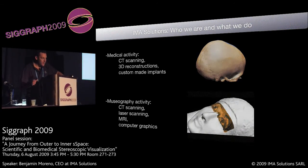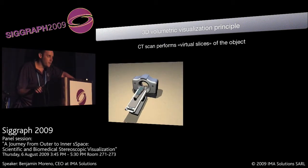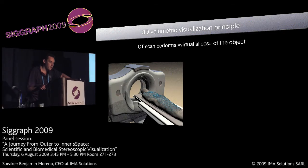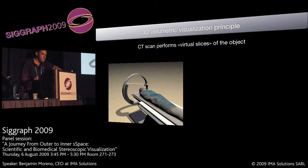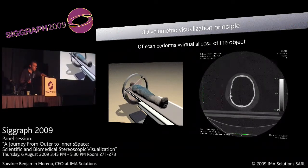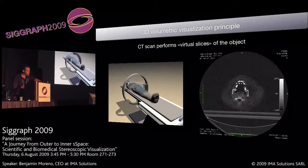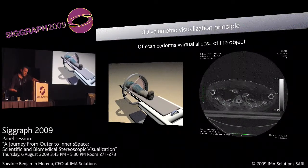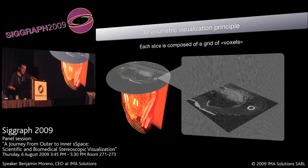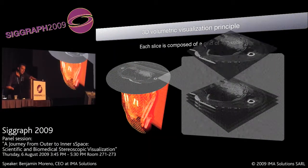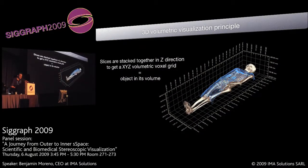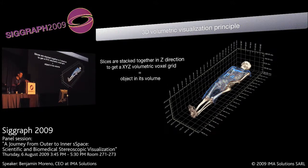Let's have a look at the core technology called volumetric visualization or voxel visualization. Here you see the artifact placed on the table of the CT scanner, the X-ray tube, and on the right, the DICOM slices, which are a kind of stack of gray-level images — that's the starting point of studying ancient artifacts. Each slice is composed of what we call a voxel grid, and the goal is to stack them together to get at the end an X, Y, Z volumetric voxel grid, which represents the object in its entire volume.